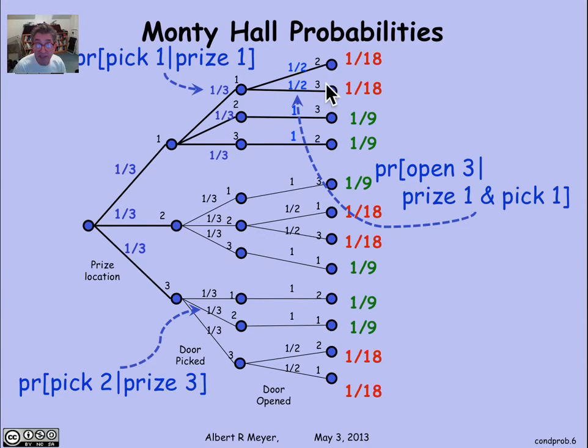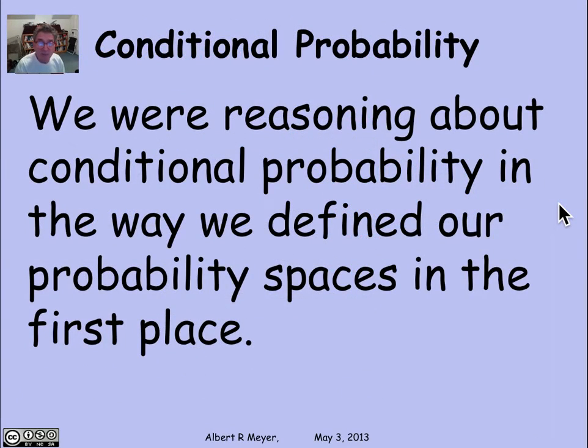And when the prize is at 1 and the contestant picks 1, Carol, we said in our model, is equally likely to open the two possible doors that have goats that she's able to open. And so that 1 half is this conditional probability, the probability that she'll open door 3 given that we're in this location in the tree, given that the prize is at 1 and pick is at 1. So the point is simply that we were reasoning about conditional probability in the very way we began defining the tree model that we were using to define probability spaces in the first place. We were implicitly using conditional probabilities to label the probabilities that left each vertex of the tree.